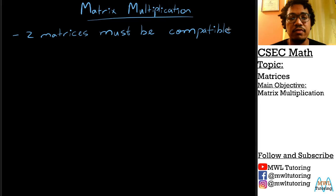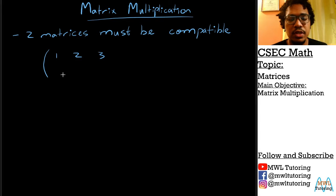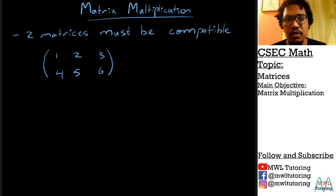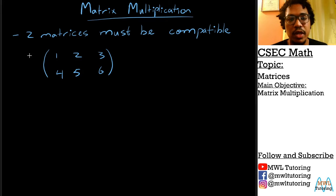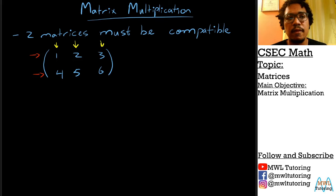Let's say I have a matrix like this: 1, 2, 3, 4, 5, 6. Remember from our first video, we could describe this matrix in terms of its order by calling out how many rows and columns there are. There are 2 rows in this matrix and there are 3 columns. So what we say is that this matrix here is a 2 by 3 matrix.